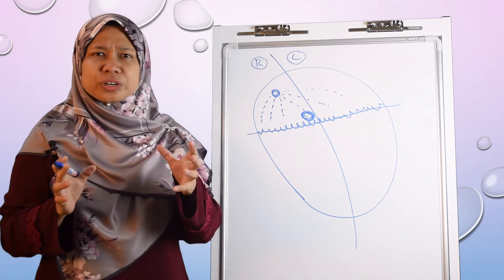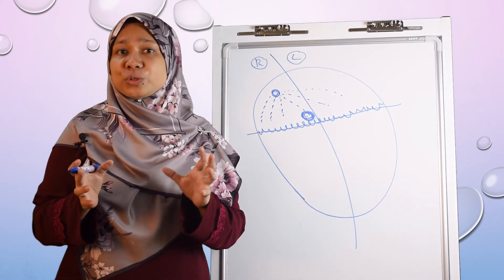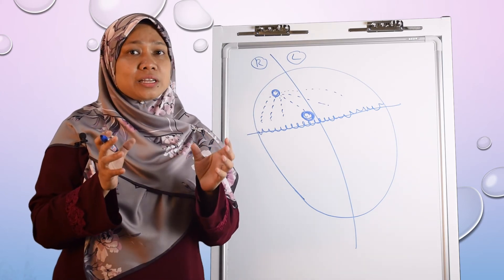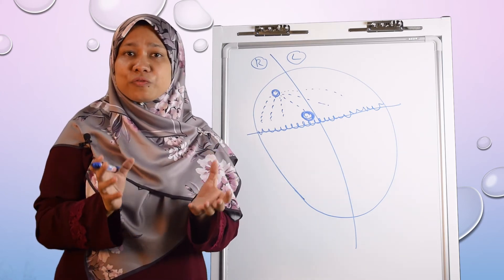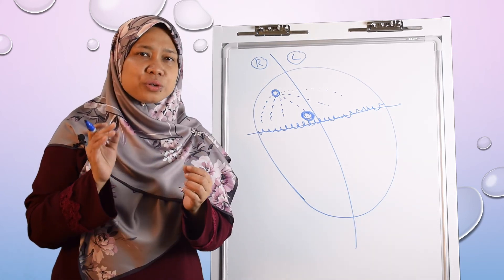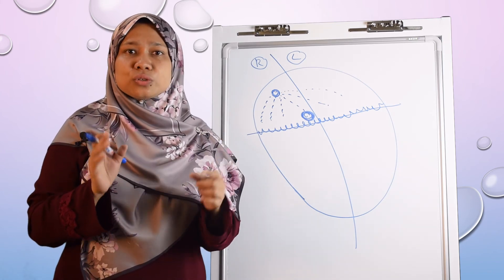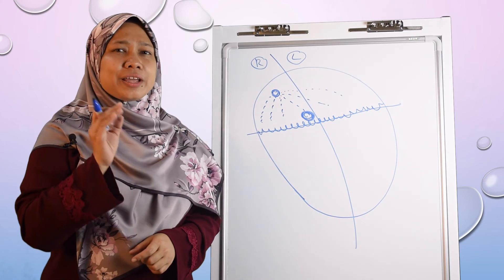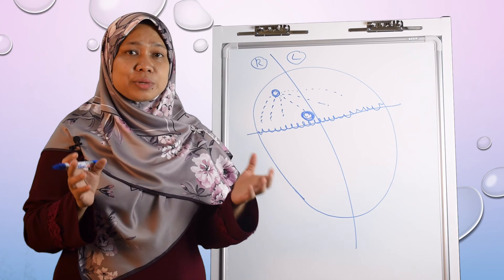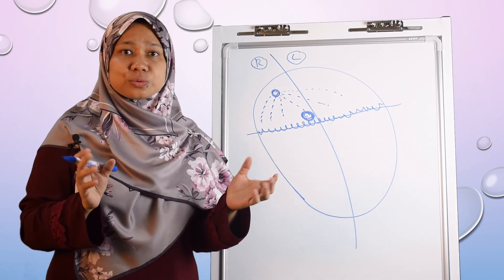If the ventricle is contracting too fast — as in supraventricular tachycardia or ventricular tachycardia — there won't be enough time for blood to fill the ventricle. Even though heart rate is increased, stroke volume is reduced because the blood volume in the ventricle is reduced, so cardiac output is reduced. That's why in very high heart rates, such as in arrhythmia, there is cardiogenic shock due to remarkably reduced cardiac output.